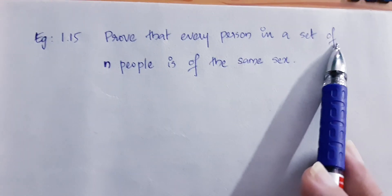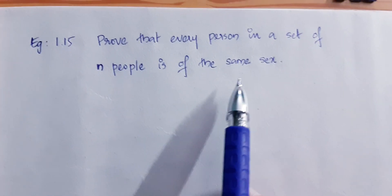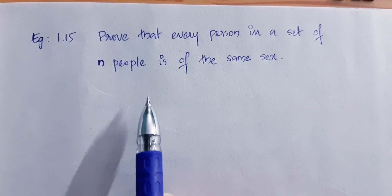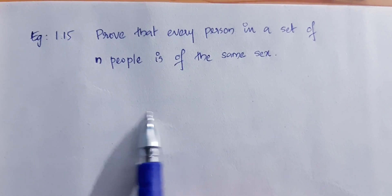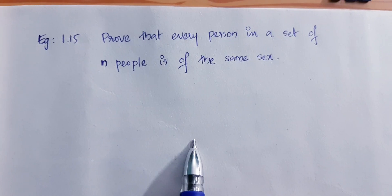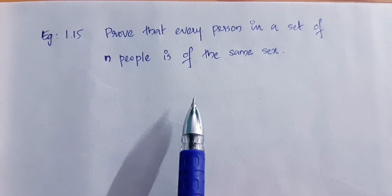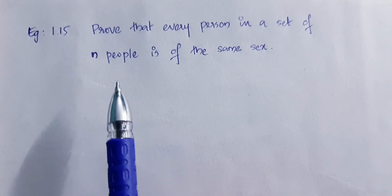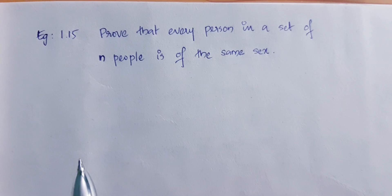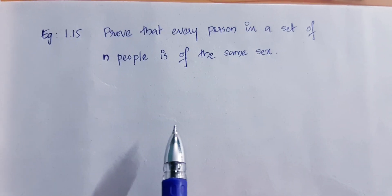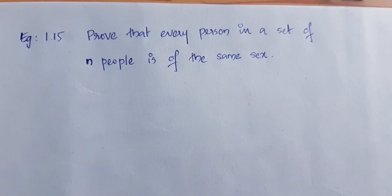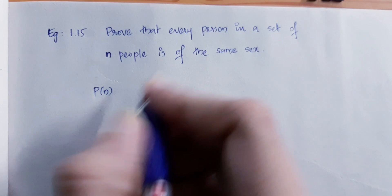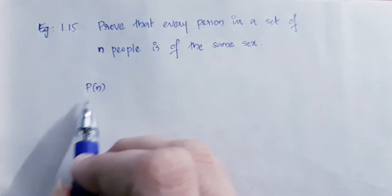The question is: Prove that every person in a set of N people is of the same sex. We define P of n as: every person in a set of n people is of the same sex. So P of n is our statement.